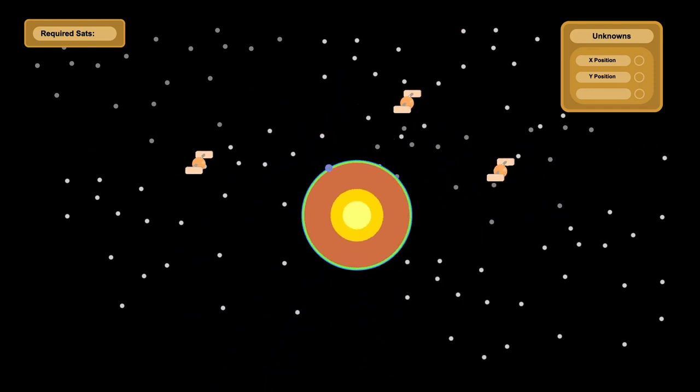Because there are two unknowns, for your phone to calculate them, it needs data from two satellites. When your phone receives the location and timestamp from the first satellite, let's say it calculates that the satellite is 20,000 kilometers from you. Based on that information alone, you could be here, but you could also be here, here, or anywhere on the circle.